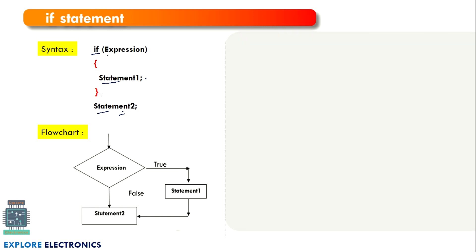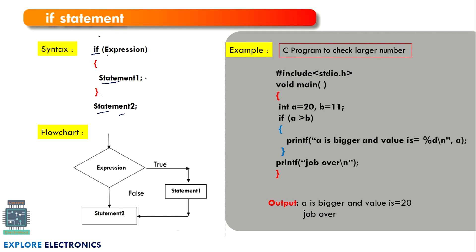Let's take a small example — a program to check the larger number. We have two variables a and b with values 20 and 11. We check if a is greater than b. Since a is 20 and b is 11, this condition is satisfied, so it executes the printf statement printing 'a is bigger' and the value of a. After coming out of the if statement, it also executes the next statement. The output shows 'a is bigger, value is 20' and 'job over'.